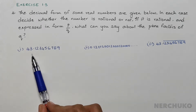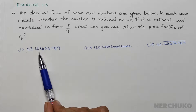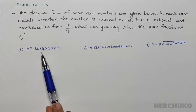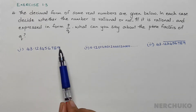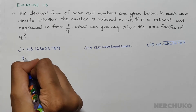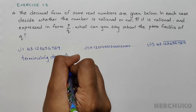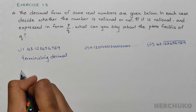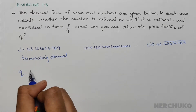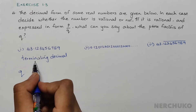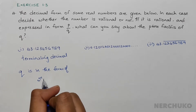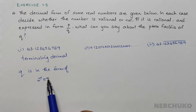For the first part, we have 43.123456789. Since after the decimal it terminates up to 9, we can simply write it as a terminating decimal. If it is a terminating decimal, we already learned that the denominator Q can be written in the form of 2 power n into 5 power m. That is, the denominator will have the prime factors 2 and 5 only.